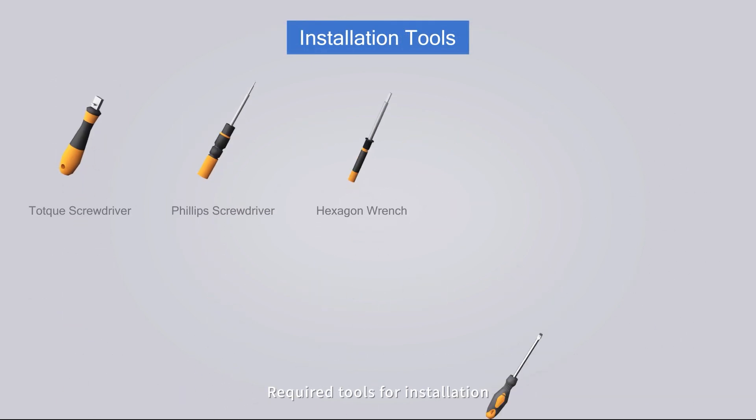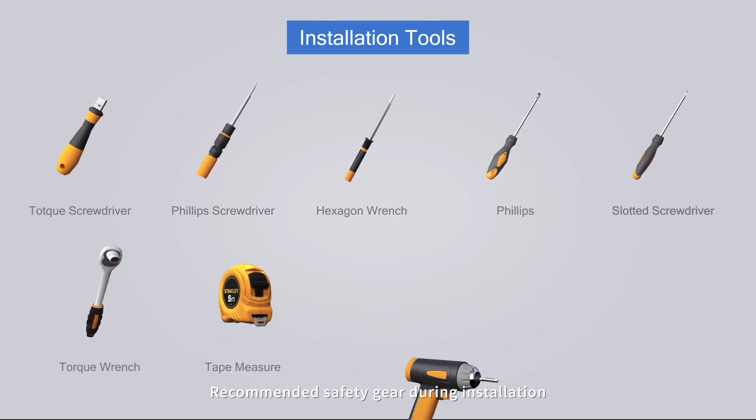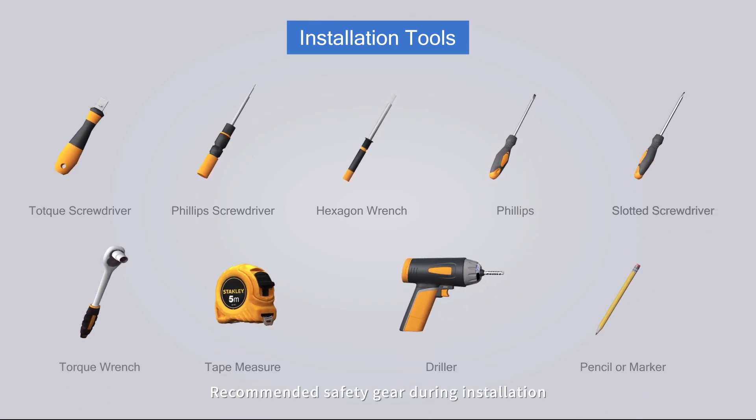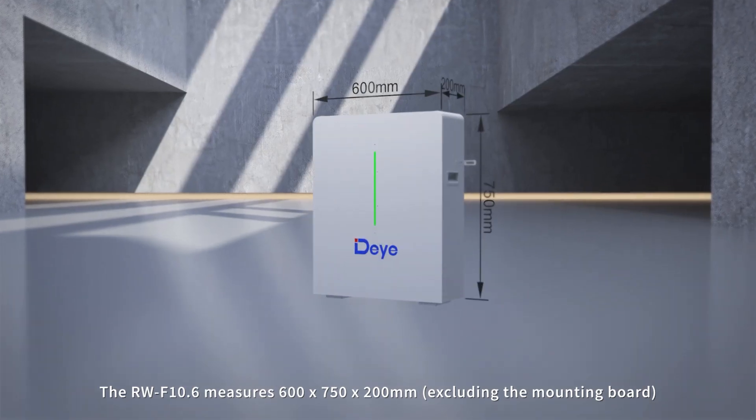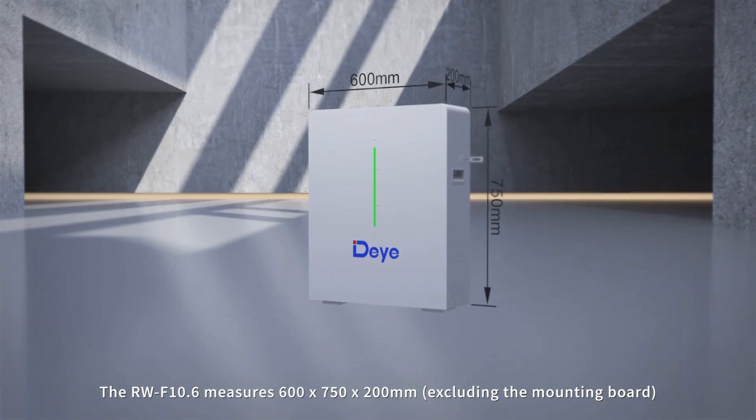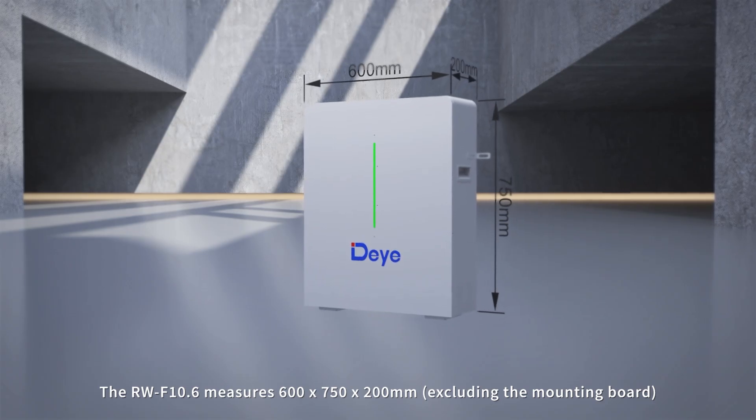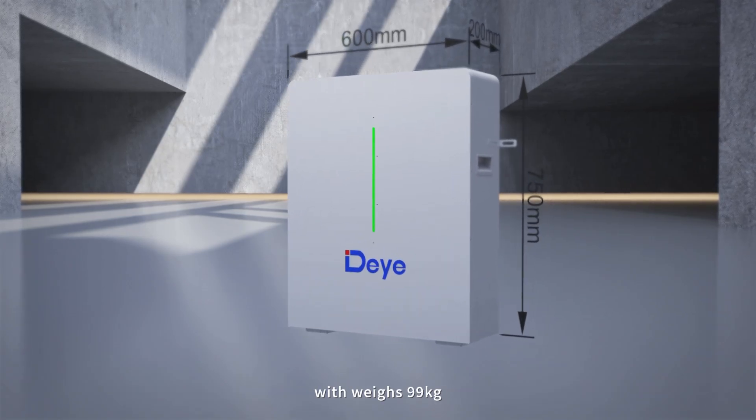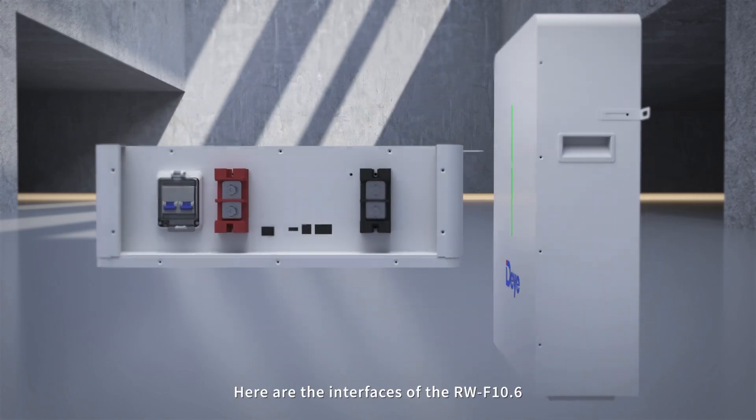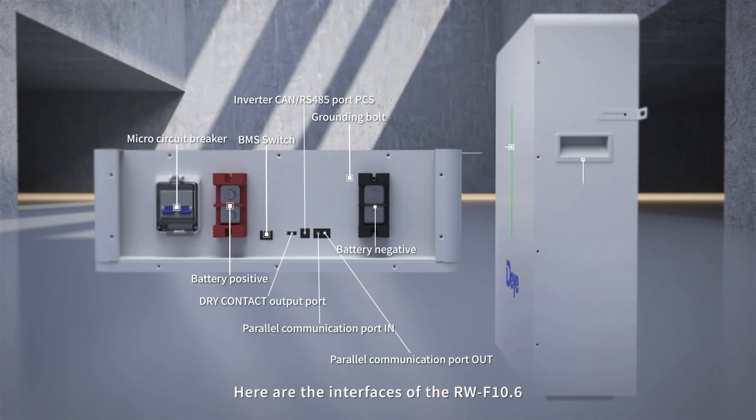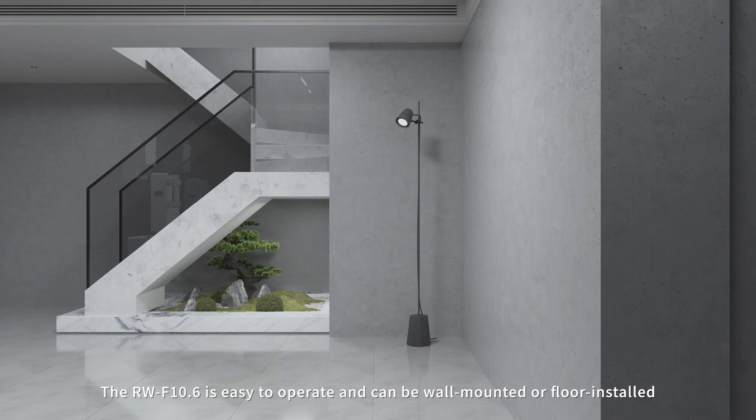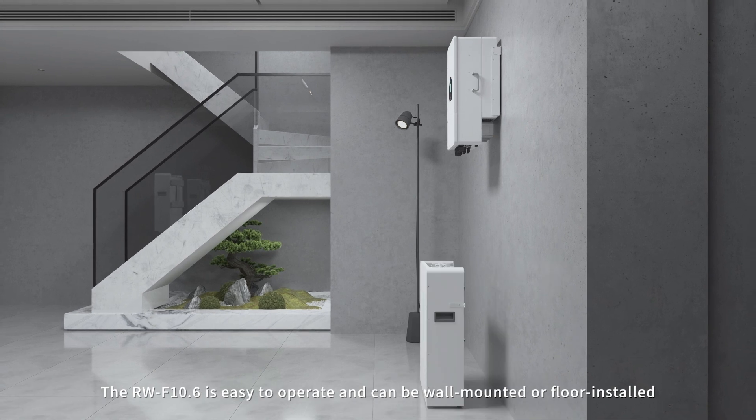Required tools for installation: recommended safety gear during installation. RW-F10.6 installation: The RW-F10.6 measures 600 by 750 by 200 millimeters and weighs 99 kilograms. Here are the interfaces of the RW-F10.6.